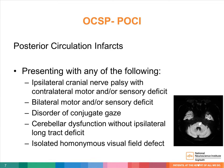Finally, posterior circulation infarcts. These are patients with any of the following: an ipsilateral cranial nerve palsy with a contralateral motor or sensory deficit; a bilateral motor or sensory deficit; or disorders of conjugate gaze. They can also present with cerebellar dysfunction without ipsilateral long tract deficits, or with isolated homonymous visual field defects.